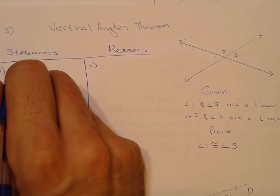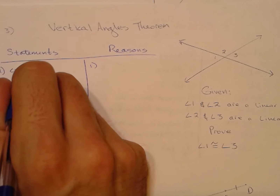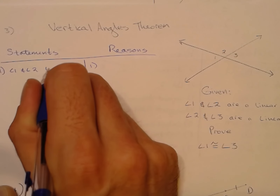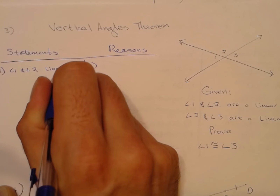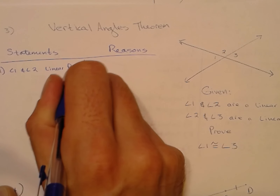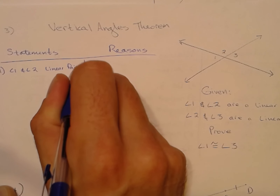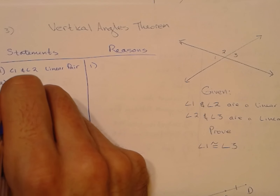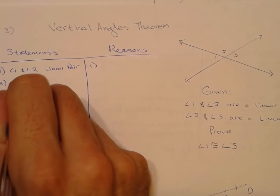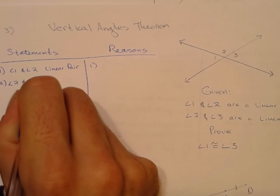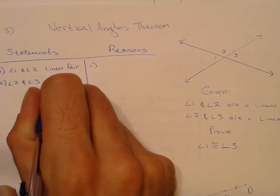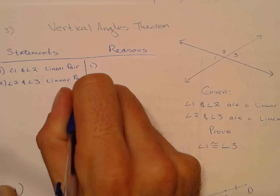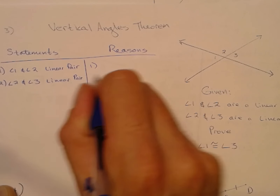We'll start off with: angle one and angle two are a linear pair, and also angle two and angle three are a linear pair as well. Both of those are given.